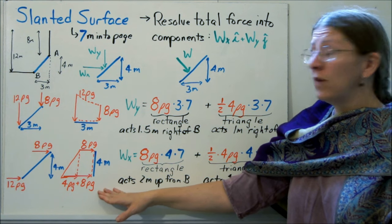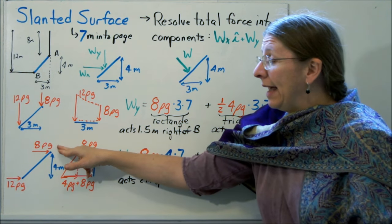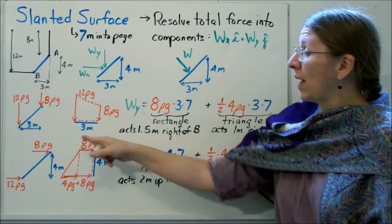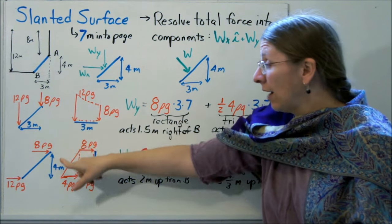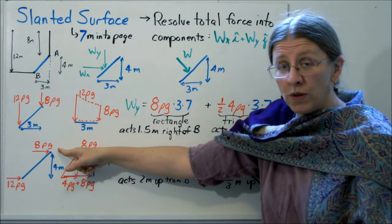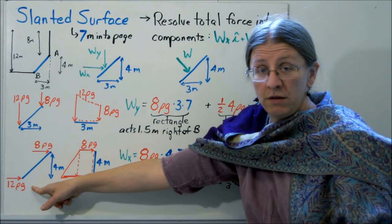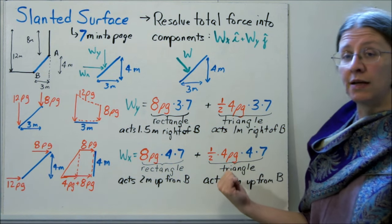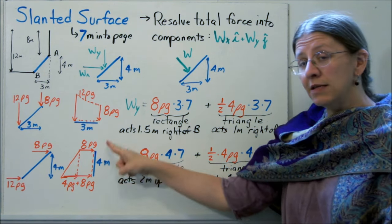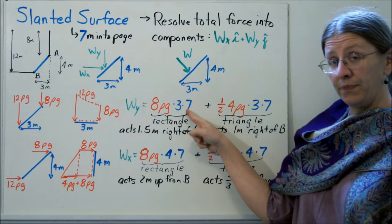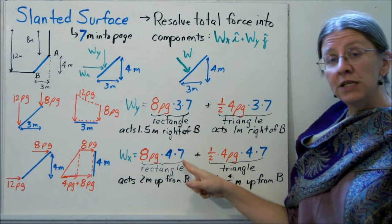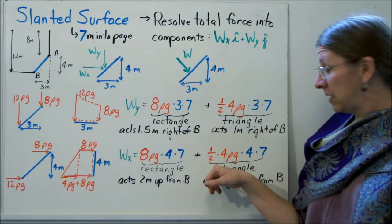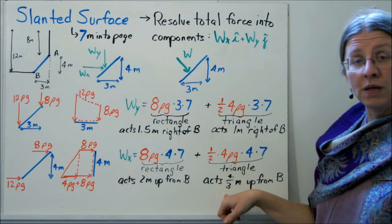Wx is the same sort of thing, except the arrows are going in a different direction. At A, I've got 8ρg still. Pascal's Law tells us that the pressure acts the same in all directions. So at A, it's going to be 8ρg whether you're talking about 8ρg down or 8ρg to the right. At B, I've got 12ρg. Now, principle of transmissibility, slide those arrows until they're all lined up, and you have another rectangle and triangle. Notice that now my area that this is acting over is 4 times 7, not 3 times 7. So my rectangle is 8ρg times 4 times 7, that's going to act 2 meters up from B. The triangle is 1/2 times 4ρg times 4 times 7, that's going to act 4/3 of the way up from B.